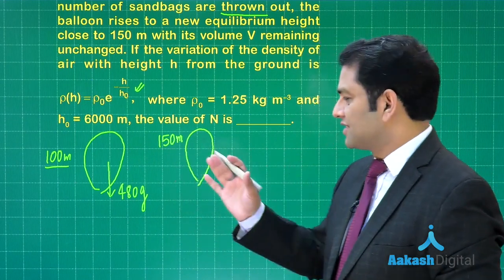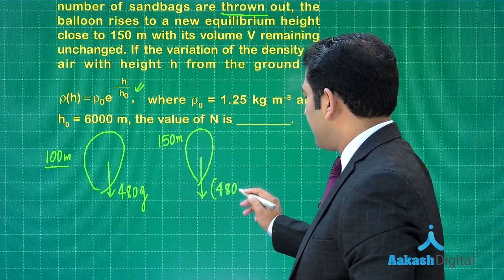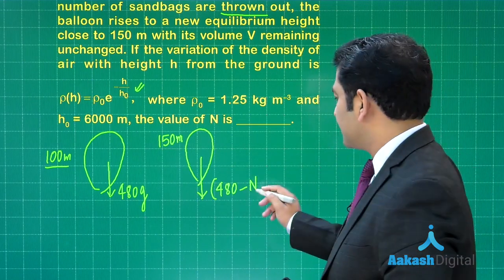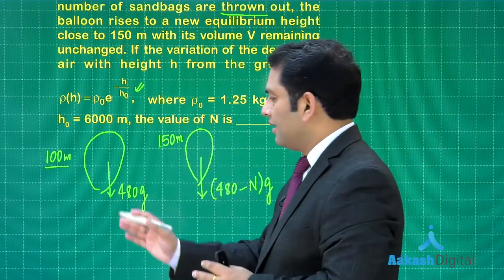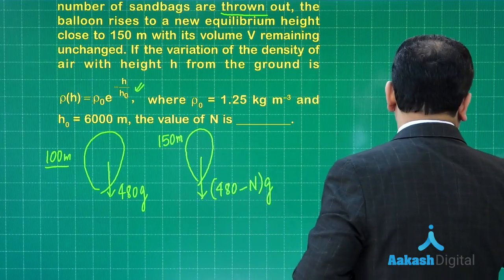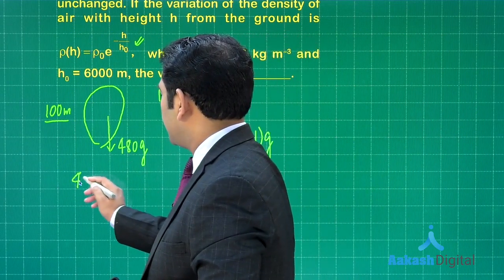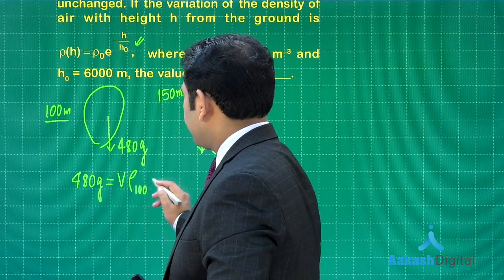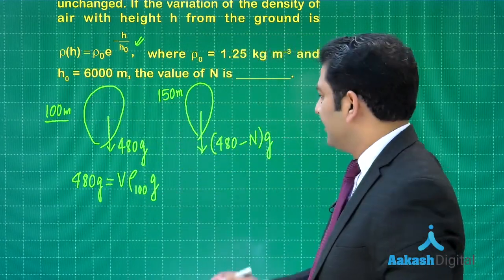The new weight is (480 − n)g, since each sandbag weighs 1 kg. All you need to do is equate the new weight with the new upthrust. Initially: 480g = V × ρ(100) × g. Finally: (480 − n)g = V × ρ(150) × g.